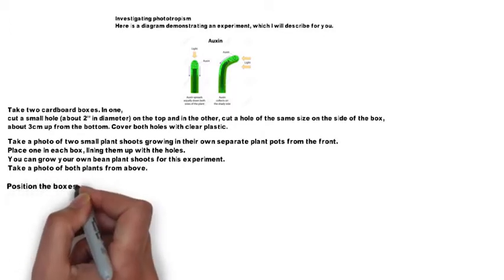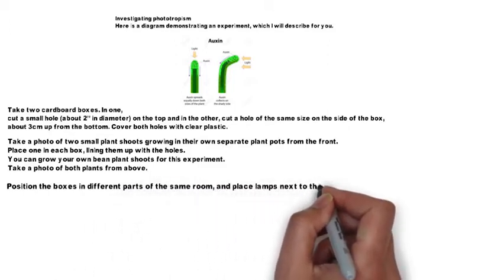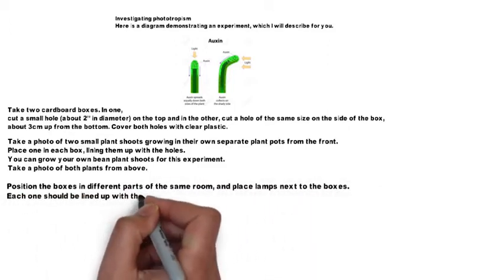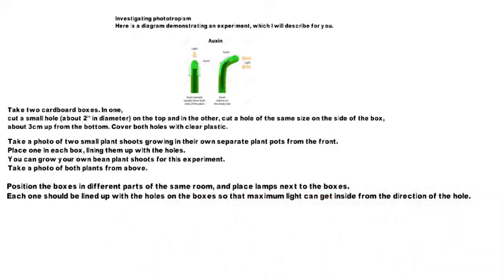Position the boxes in different parts of the same room and place lamps next to the boxes. Each one should be lined up with the holes on the boxes so that maximum light can get inside from the direction of the hole.